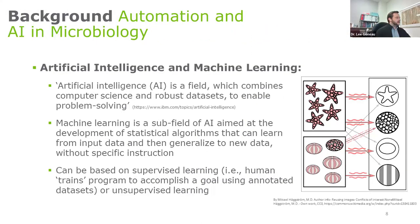I would like to set kind of the knowledge basis for AI. I found a nice definition from IBM which summarized AI as the field which combines computer science and robust data sets to enable problem solving — a pretty nice summary of what AI is in a nutshell. In this talk, I'm going to be speaking a lot about machine learning, which is a subfield of AI aimed at the development of statistical algorithms that can learn from input data and generalize to new data without specific instructions. These machine learning systems can be based on supervised learning, which is the bulk of what I'll be talking about, or unsupervised learning.